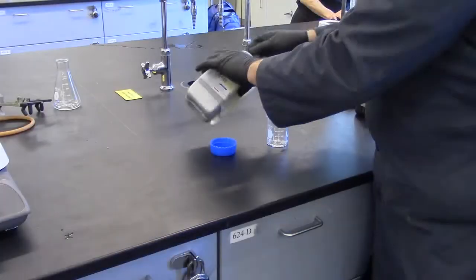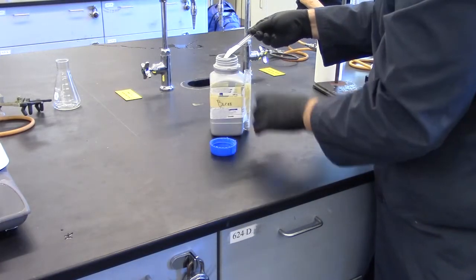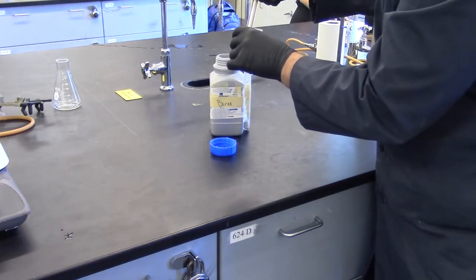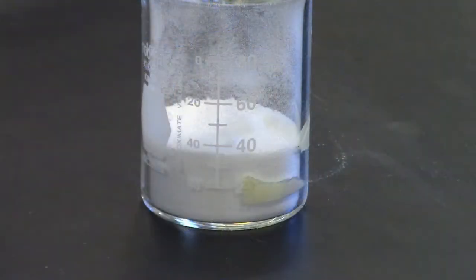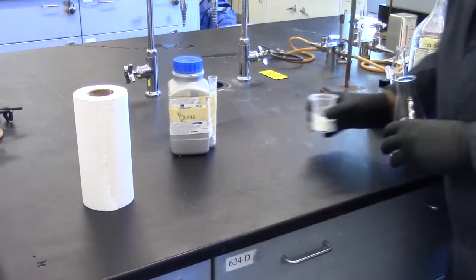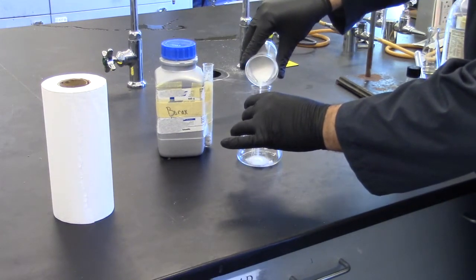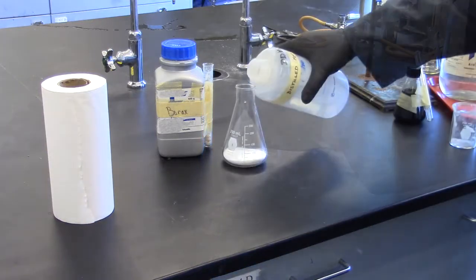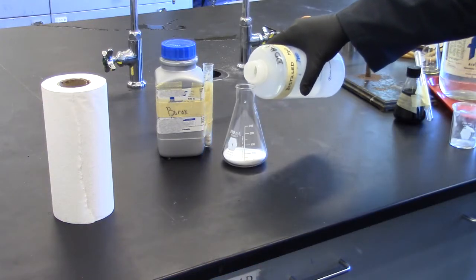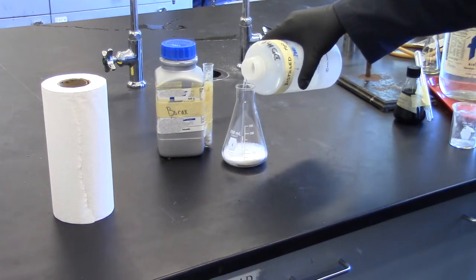The first step does not require weighing. Obtain a sample of solid borax and put it in a small 100 milliliter beaker. Fill it up to the 40 milliliter mark. Transfer borax into a 250 milliliter Erlenmeyer flask. Add approximately 80 mils of distilled water to this.